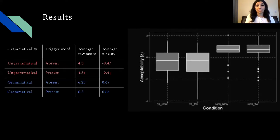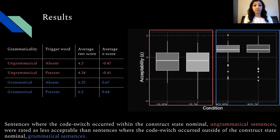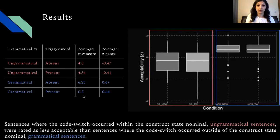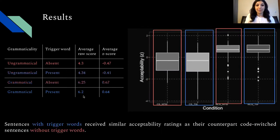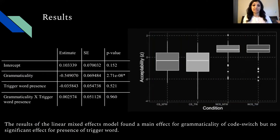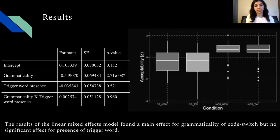The results showed that sentences where the code switch occurred within the construct state — the ungrammatical sentences — were rated as less acceptable than those where the switch occurred outside — the grammatical sentences. However, sentences with trigger words received similar acceptability ratings as their counterparts without trigger words. The linear mixed effects model found a significant main effect for grammaticality of code switch, but no significant effect for the presence or absence of the trigger word.